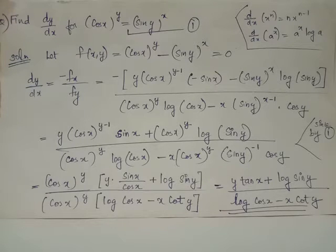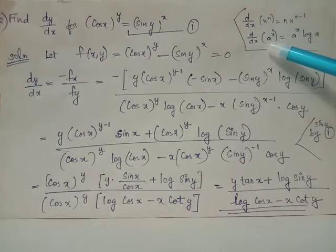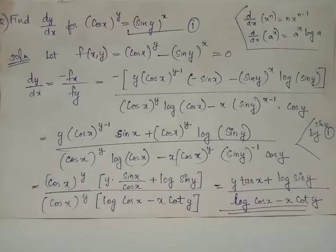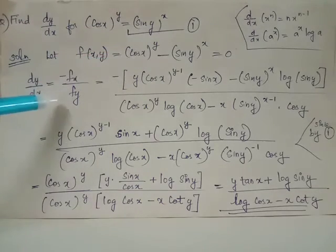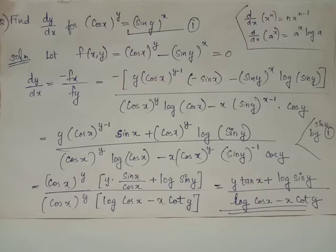Similarly we have fy, which is the partial derivative of f with respect to y treating x as a constant, obtained by taking the partial derivative of cos x whole raised to y. Since x is constant here, cos x is also constant. So we use the rule d by dx of a raised to x equals a raised to x log a, with a equals cos x and the variable being y. Thus the partial derivative of cos x whole raised to y with respect to y is cos x whole raised to y into log cos x.